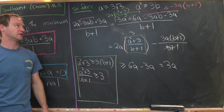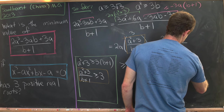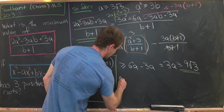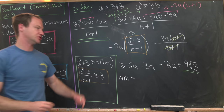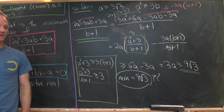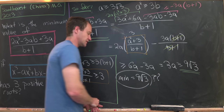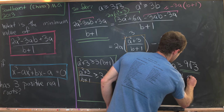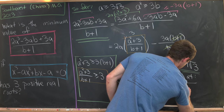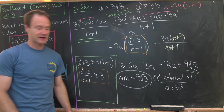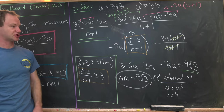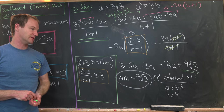Therefore, the expression is at least 2a·3 minus 3a = 6a minus 3a = 3a. Since a ≥ 3√3, we get 3a ≥ 9√3. So the minimum value appears to be 9√3. To confirm this is actually achieved, we verify with a = 3√3 and b = 9 — plugging these back into the original setup gives 9√3. So the minimum is 9√3.